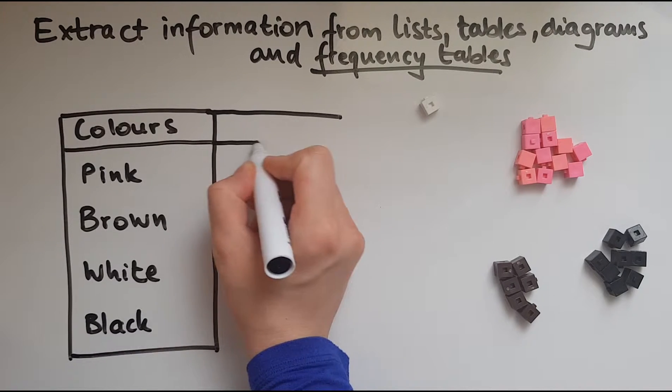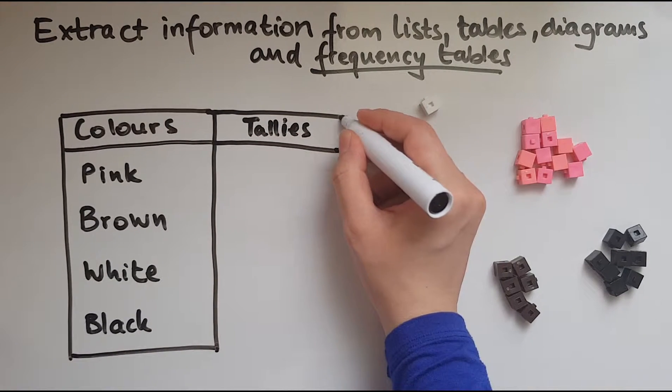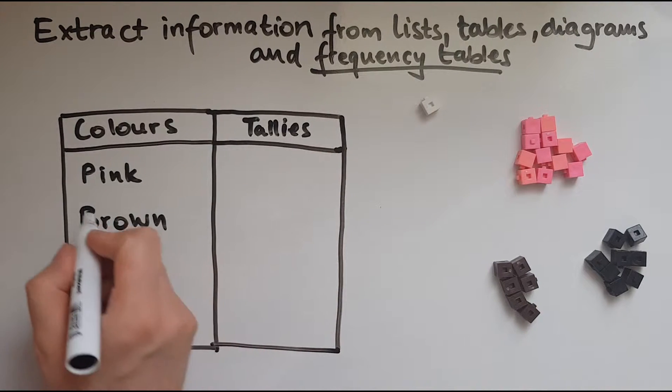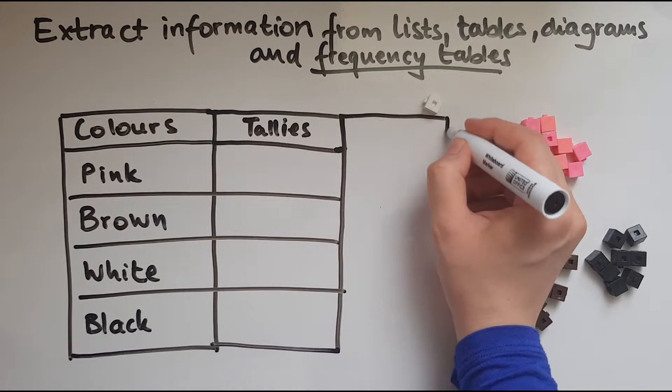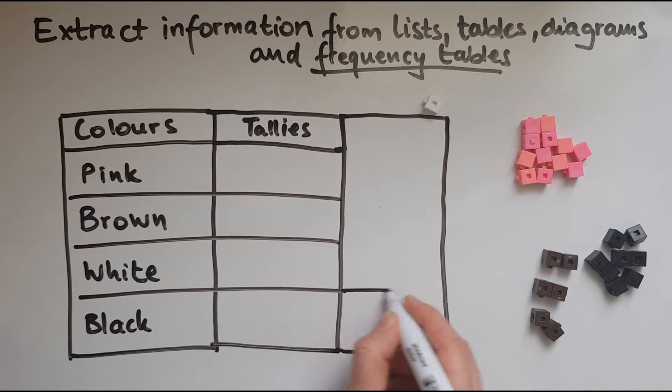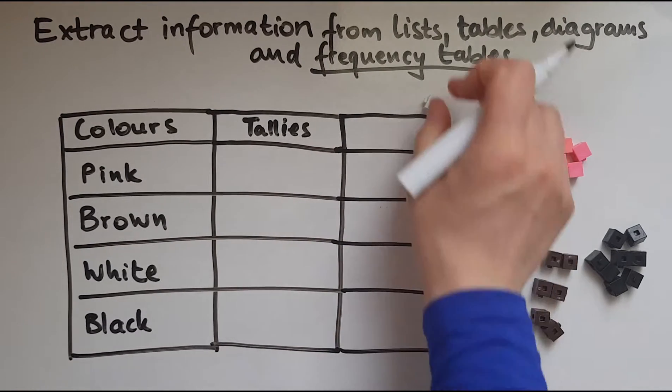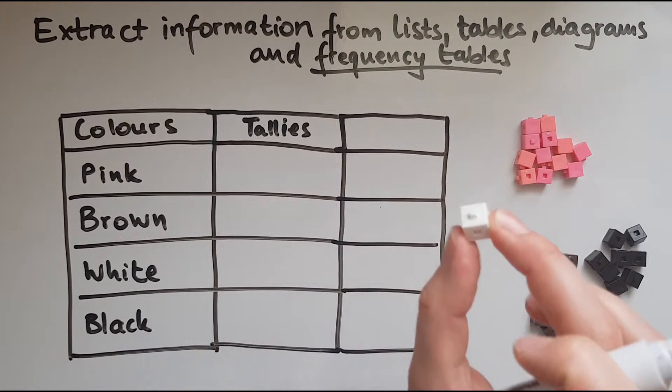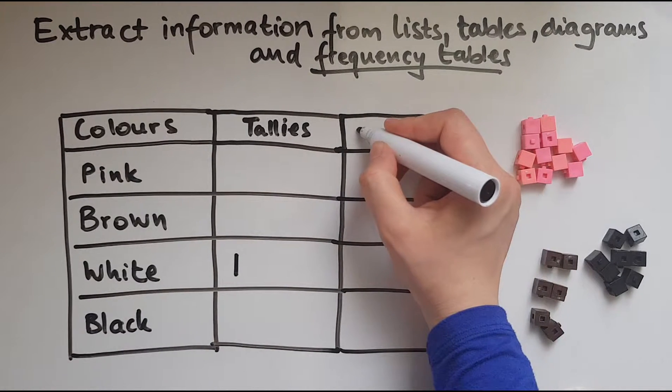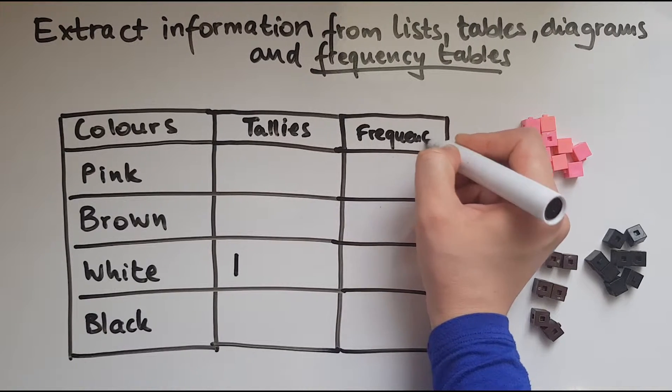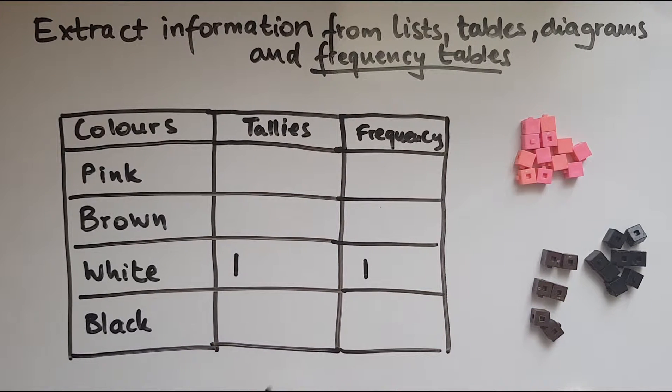So we've got the colours. Now next to it we'll record the tallies like in a tally chart. Obviously you'd use a ruler in your notebook but I'm just showing you quickly. So white, there is just one, and I'll put a mark there. And this is the frequency. It means the same thing as the tallies but you're not using tallies to record it, you're using numbers. So I'll write one as a number, a digit.